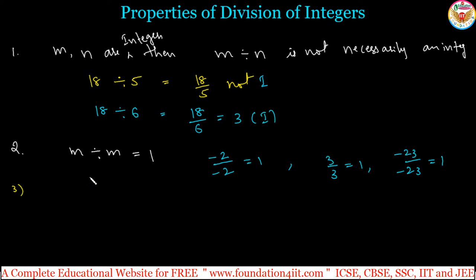And if m divided by 1, you will always get the same m only. If any number, if any integer, if any non-zero integer, 0 should not be taken, like minus 3 by 1 is minus 3, remember? And 4 divided by 1, 4 divided by 1 is again 4.